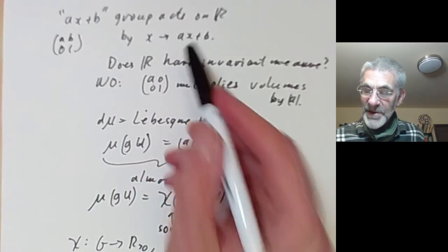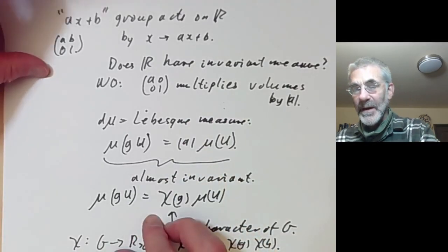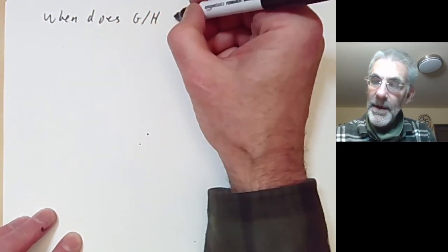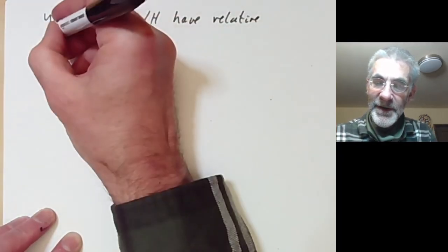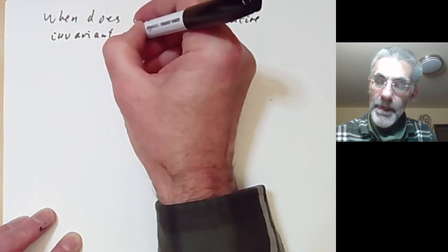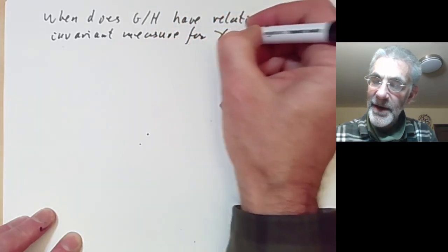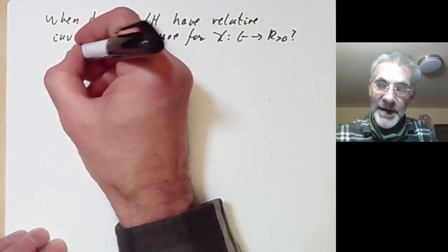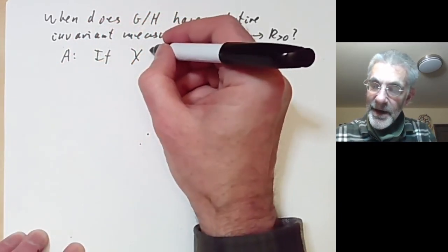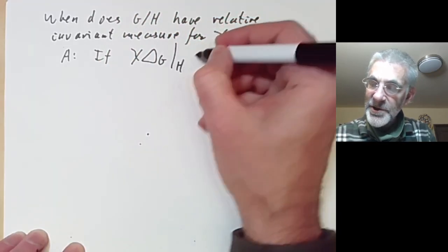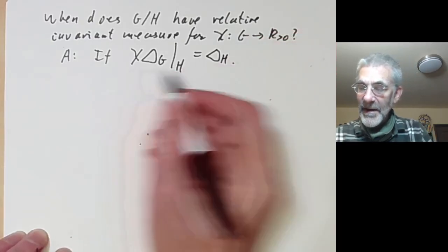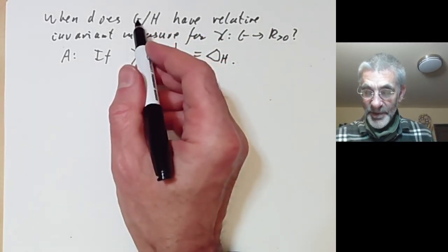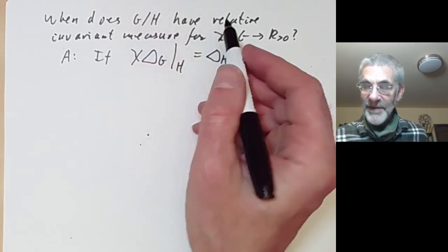So although there's no invariant measure, there's a relatively invariant measure in this case. The question is: when does G/H have a relatively invariant measure for some character χ: G → positive reals? The answer is: if we take χ times the modular function of G and restrict to H, and this equals the modular function of H, then there is a relatively invariant measure. So the modular function tells you when homogeneous spaces for Lie groups have nice measures.